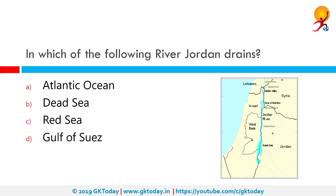In which of the following does the river Jordan drain? The correct answer is the Dead Sea, as you can see on the map. The Jordan River has an upper course from its sources to the Sea of Galilee, and a lower course south of the Sea of Galilee down to the Dead Sea.